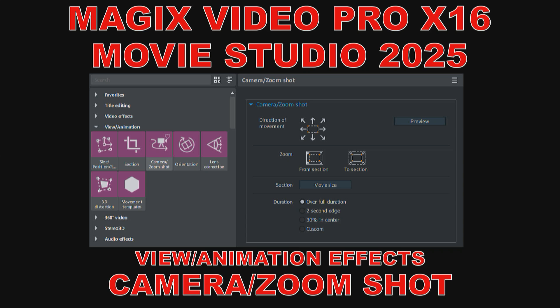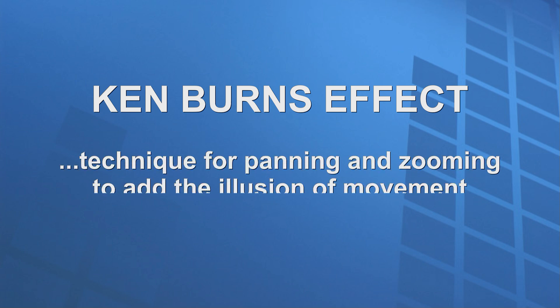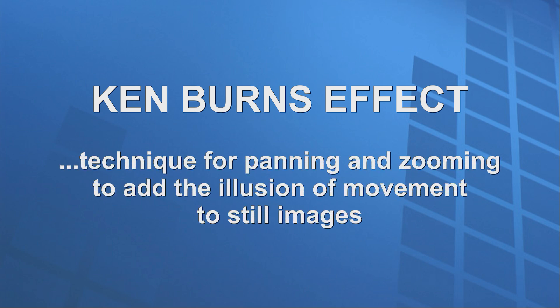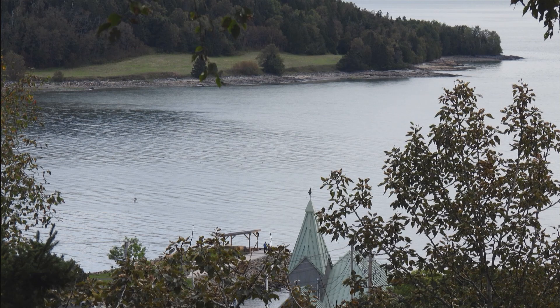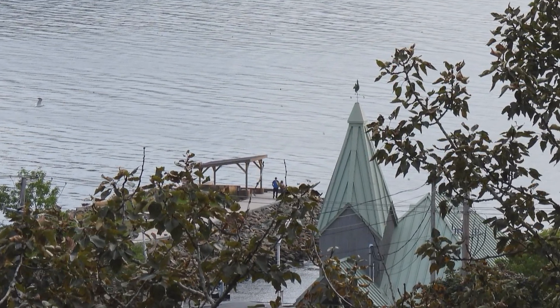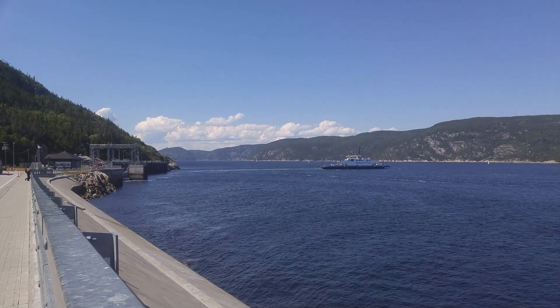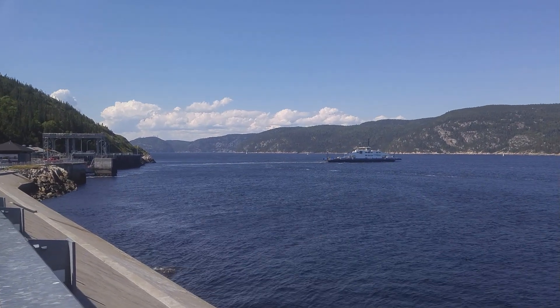Hi home video makers. Maybe you've heard about the Ken Burns effect, which is a type of panning and zooming effect used in film and video production. It was a post-production technique used by Ken Burns, an American filmmaker, and his name has become associated with this effect. This technique of panning and zooming adds the illusion of movement to still images in motion pictures, and of course, this can also be used in video clips.